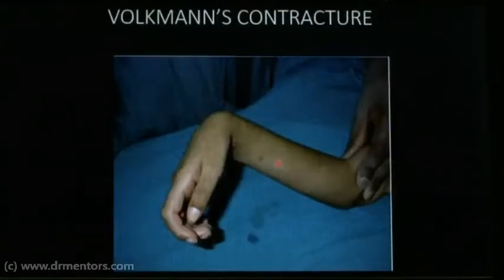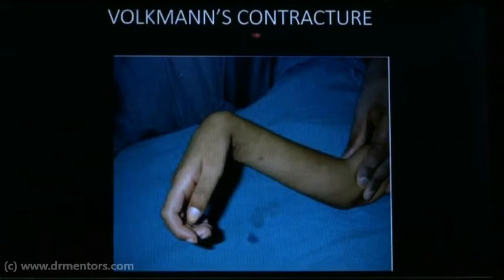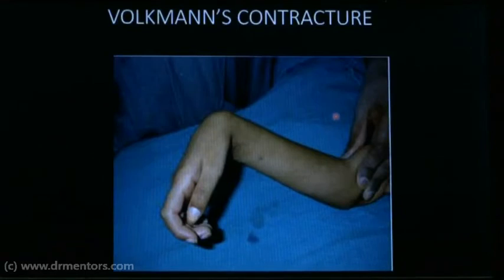Another complication of supracondylar fracture humerus is Volkmann's contracture, seen as a contracture in the hand. You identify it by flexion at the wrist and flexion at the fingers. This occurs because the flexor muscles go into contracture due to ischemia, causing everything to go into flexion. So Volkmann's contracture — flexion at the wrist and fingers — is a complication of supracondylar fracture humerus.